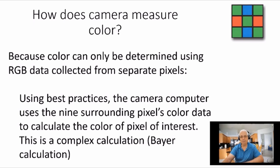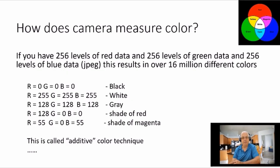If you have 256 levels of red data and 256—256 is the JPEG eight bit from zero to 255—so 256 of green data and 256 of blue data, that allows 16 million different colors.